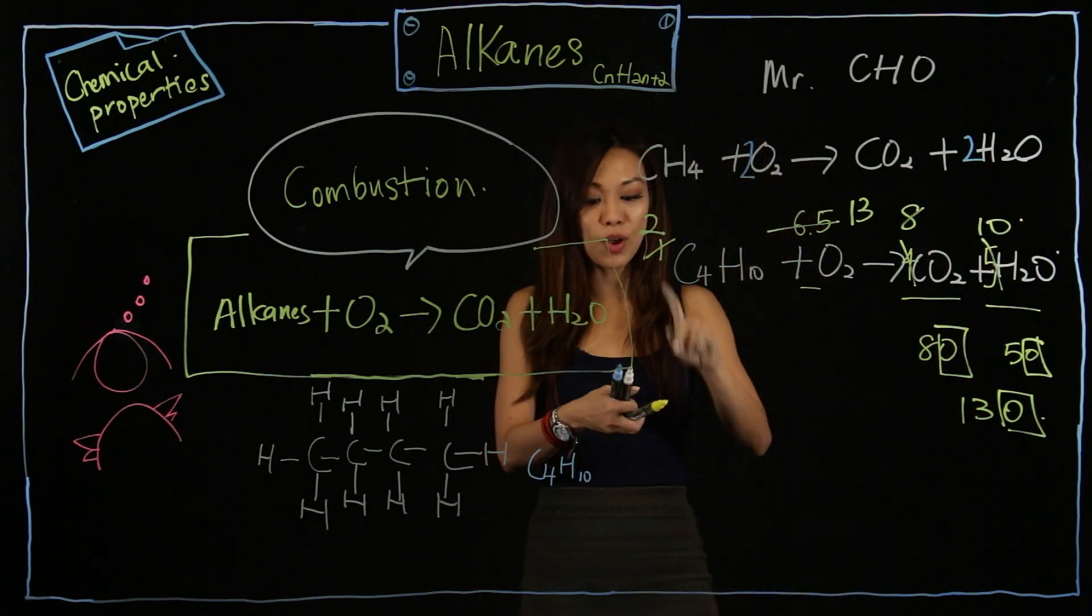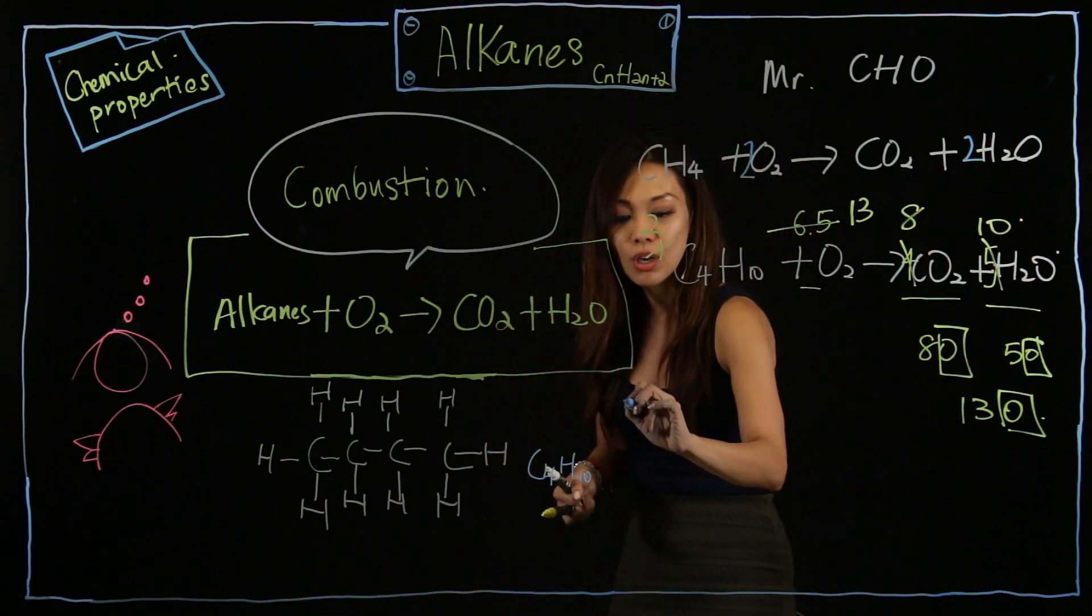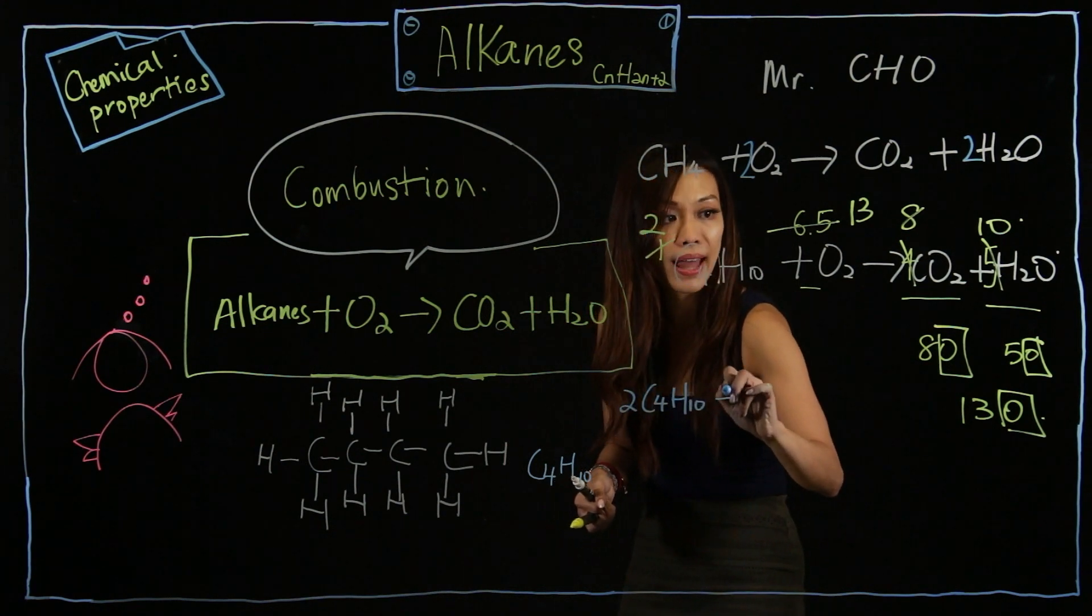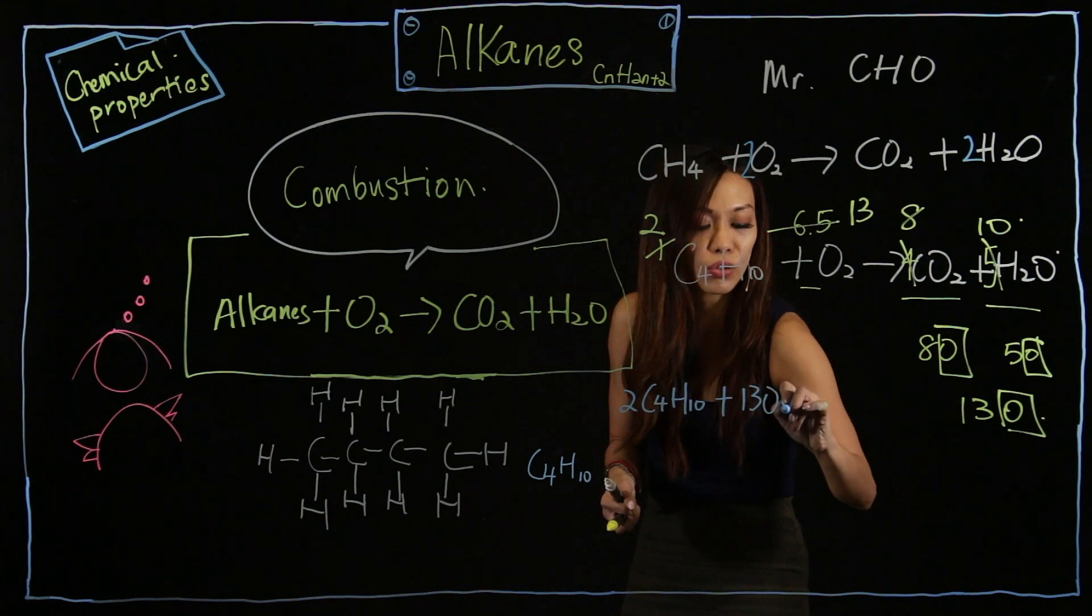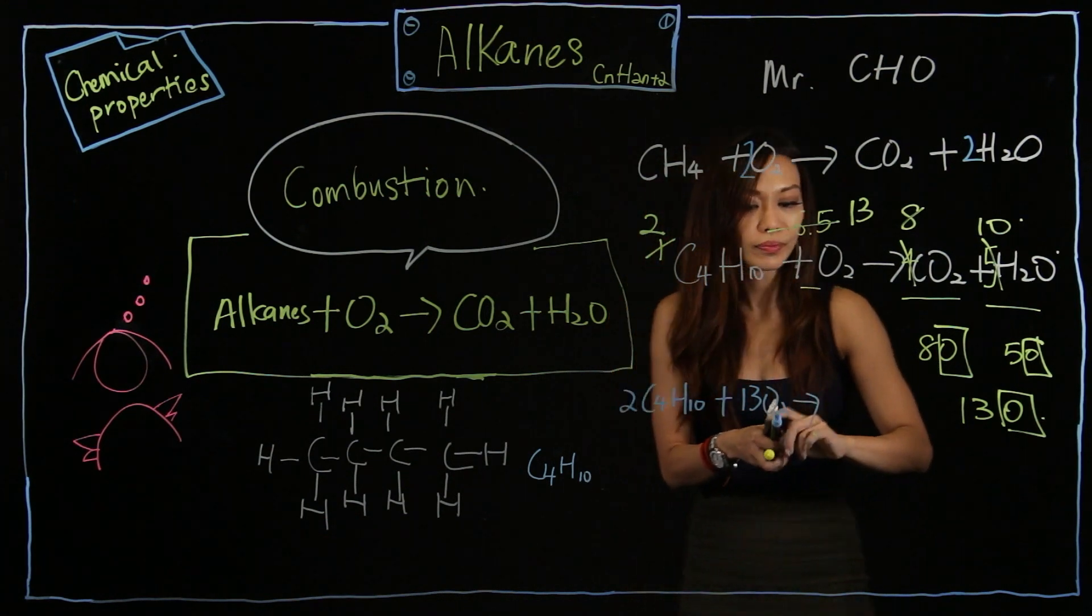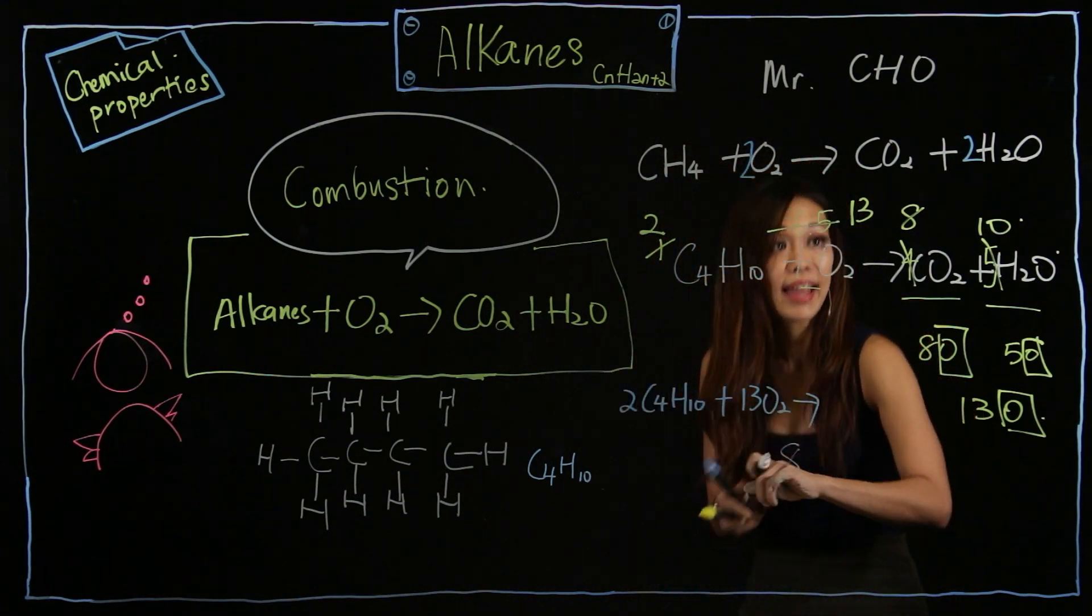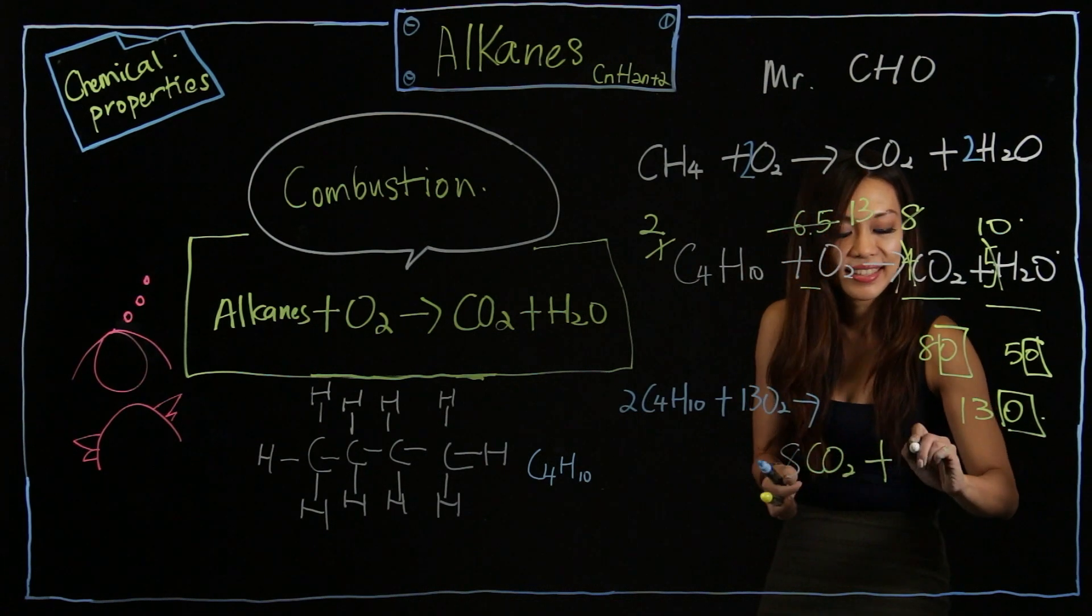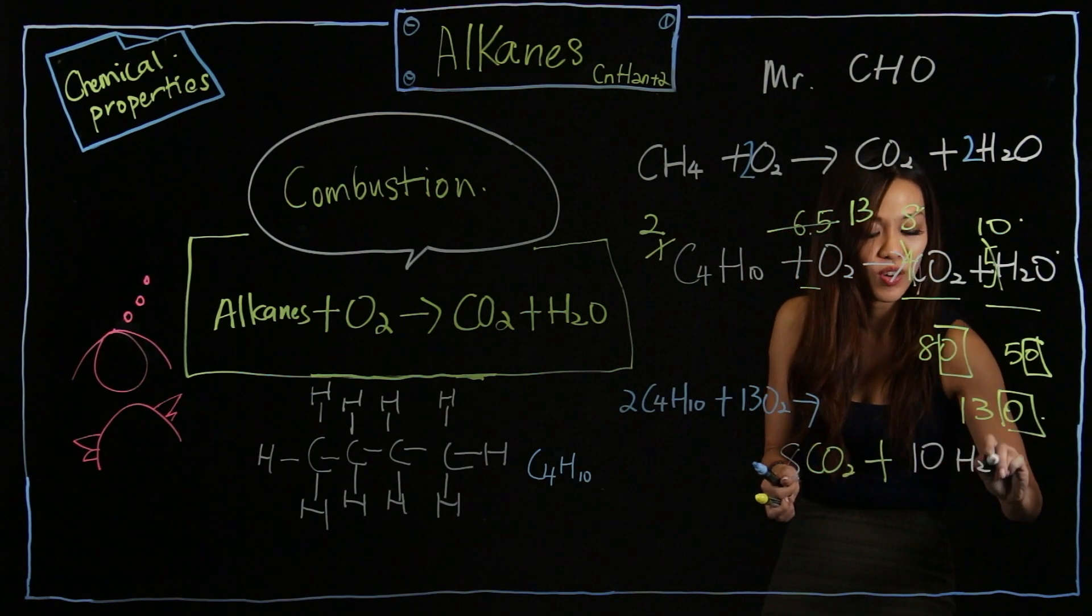So the balanced equation will look like this. 2 C4H10 plus 13 O2 will give you 8 CO2 and 10 H2O.